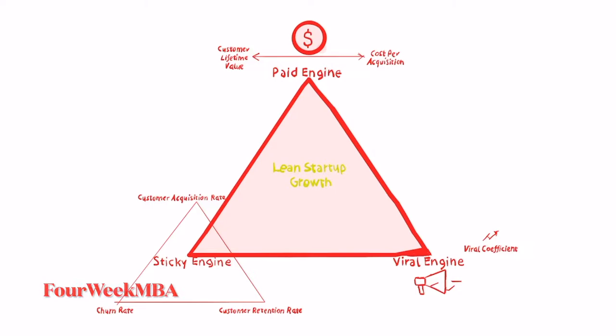When you are building up a digital company from scratch, where do you actually start? While there are many channels, from physical to digital, that you can use to grow your company, there is a very simple framework we can use as a shortcut. This is really the growth engines framework, put together in the context of the Lean Startup by Eric Ries, which we can use to actually improve the growth of a startup over time. According to this framework, we have two main engines of growth.